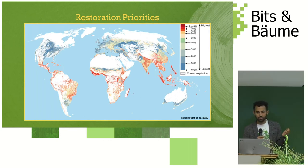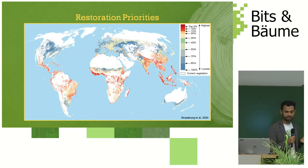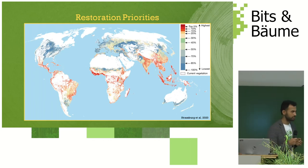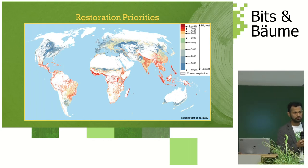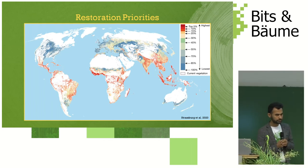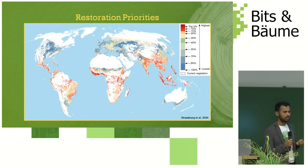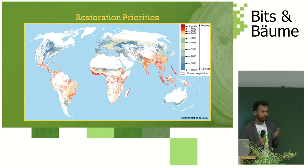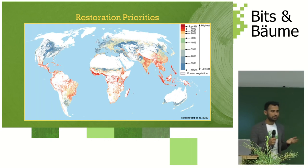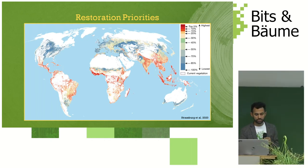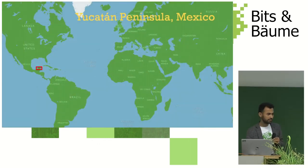Most of the places with the highest priority for restoration are in the Global South. Of course, Germany and other Global North countries are also losing forests, but the majority of places where we need to restore are in the Global South. Restoring these forests also brings us to think about how we can uplift the economic standards of people living in these areas, because most make less than a dollar a day. This is where our solutions really have an impact.